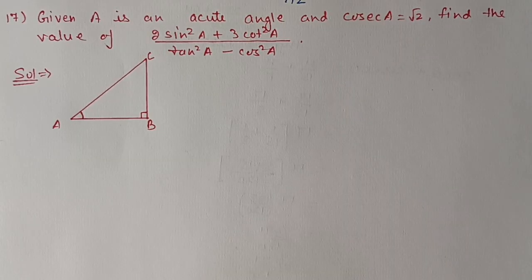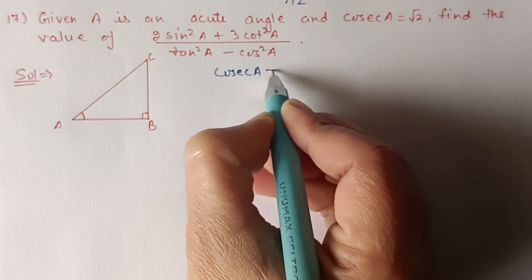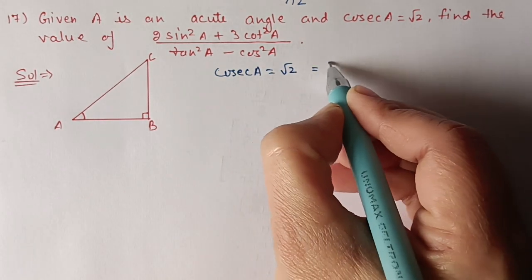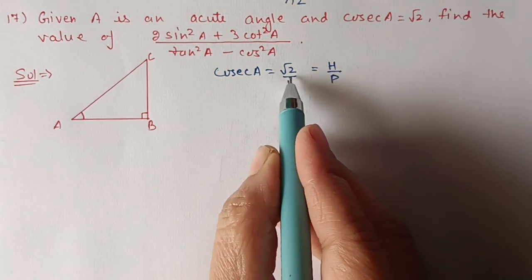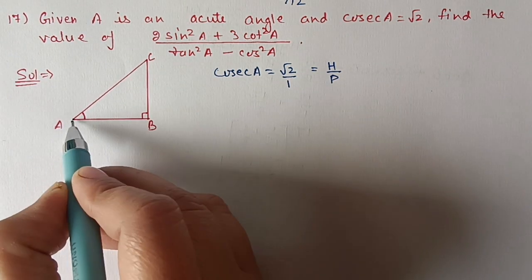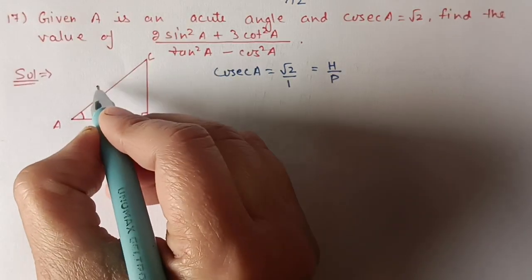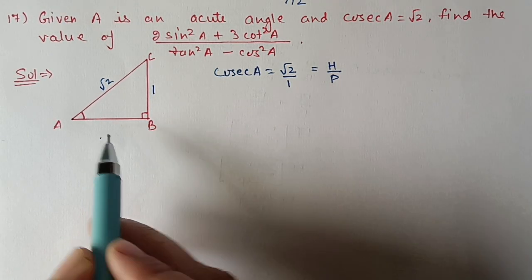Next, question number 17. Given A is an acute angle and cosecA = √2, find the value of (2sin²A + 3cot²A) / (tan²A - cos²A). We have cosecA = √2, which means hypotenuse by perpendicular = √2/1, so hypotenuse is √2 and perpendicular is 1. Make a right angle triangle — for this angle A, hypotenuse is √2 and perpendicular is 1.